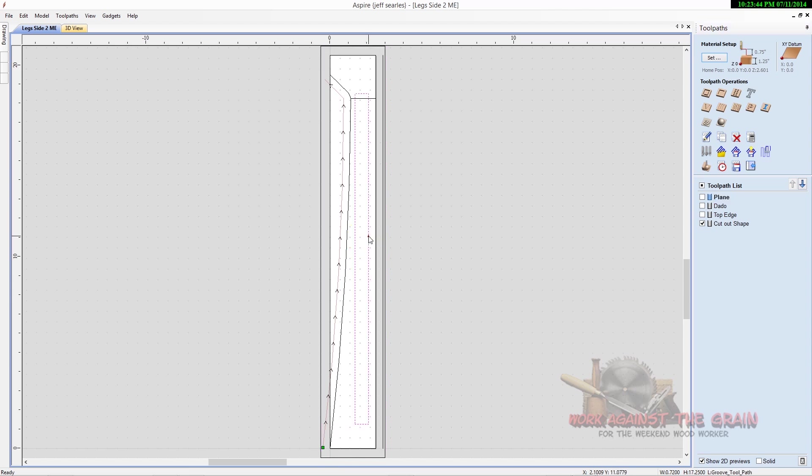Then I've got a toolpath here for a dado that we're going to machine on two sides of the material. Then I have a profile path here that we're going to cut out, and then I've got a vector here that we're going to machine just outside of that so I know where to take this to the table or the bandsaw and cut the stock off.